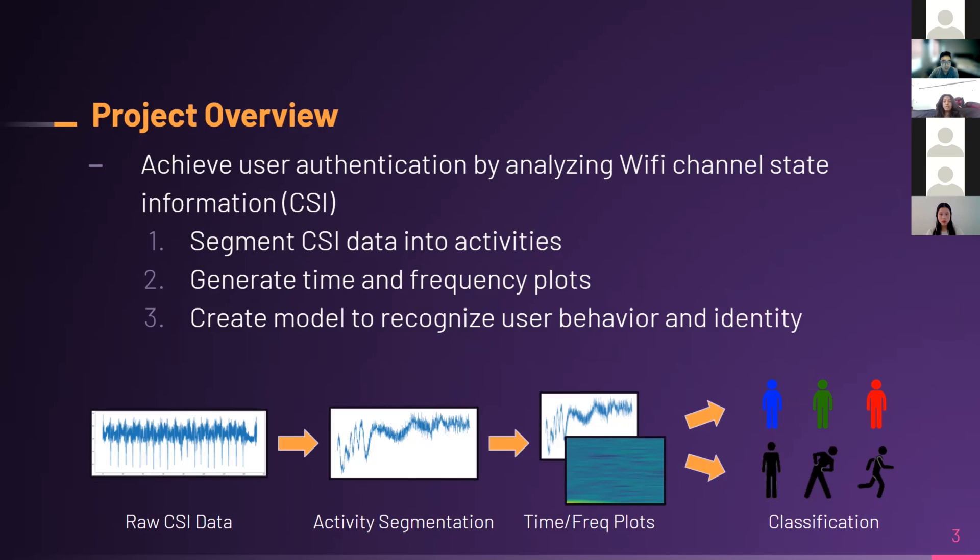The system would be able to detect and identify you based off the disruptions that you cause in the Wi-Fi signal area. With this CSI data as input, we are aiming to develop a machine learning model which is capable of authenticating on its own and identifying a specific individual.